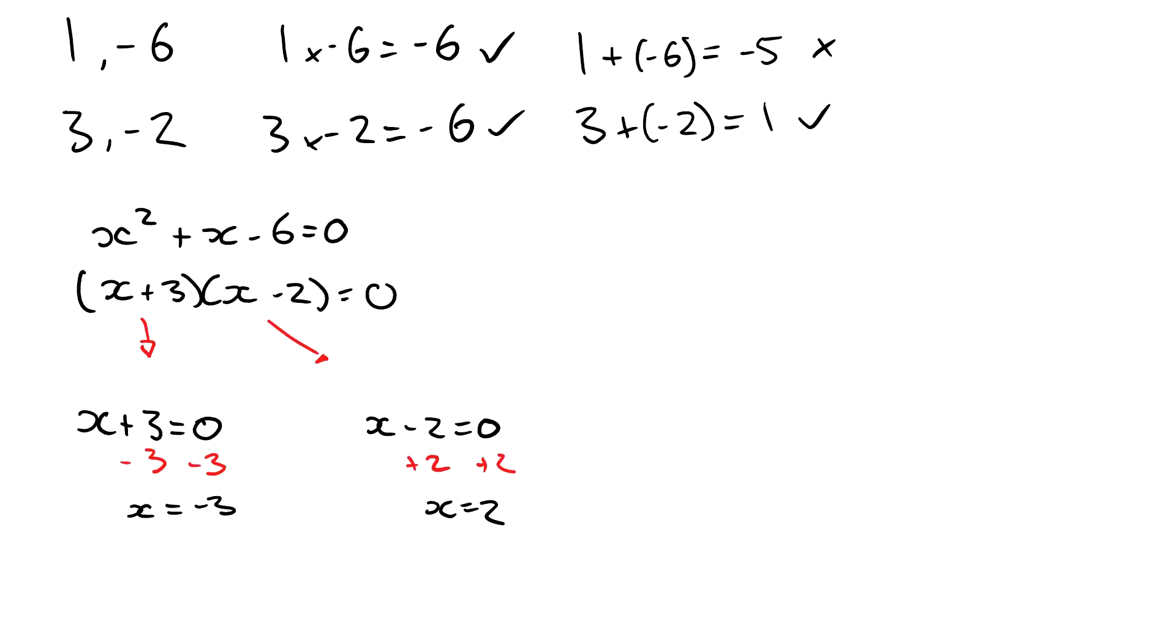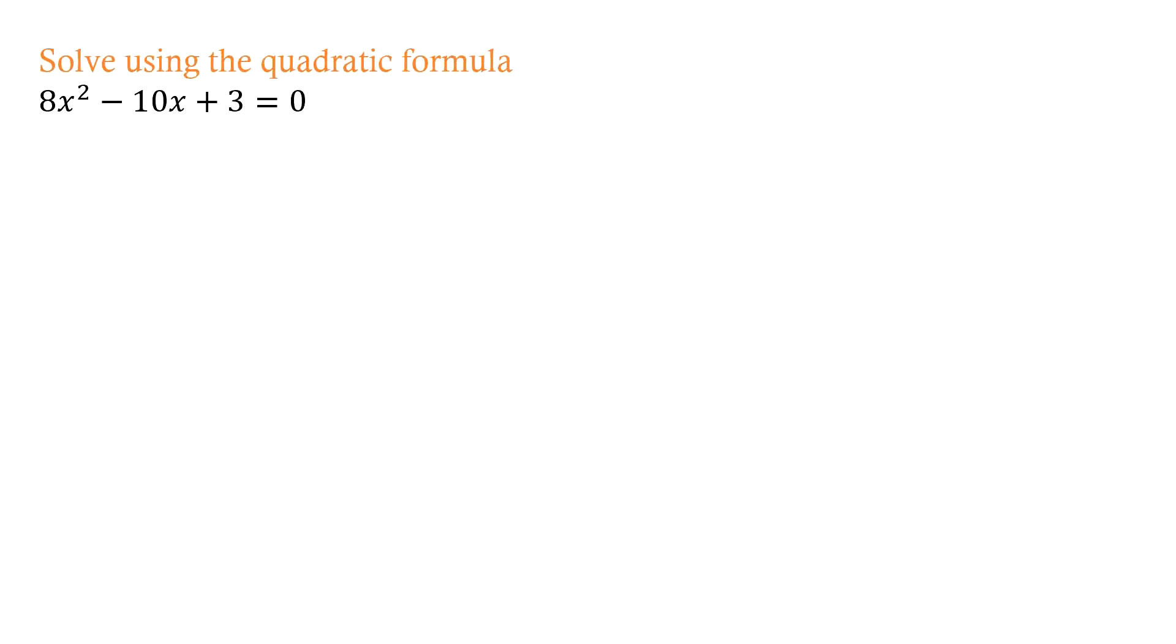Now here we're going to do another one and solve it using the quadratic formula. Remember, here's my a, b, c and x equals negative b plus or minus square root of b squared minus 4ac over 2a. That's your formula. What you do is just substitute all your values in.